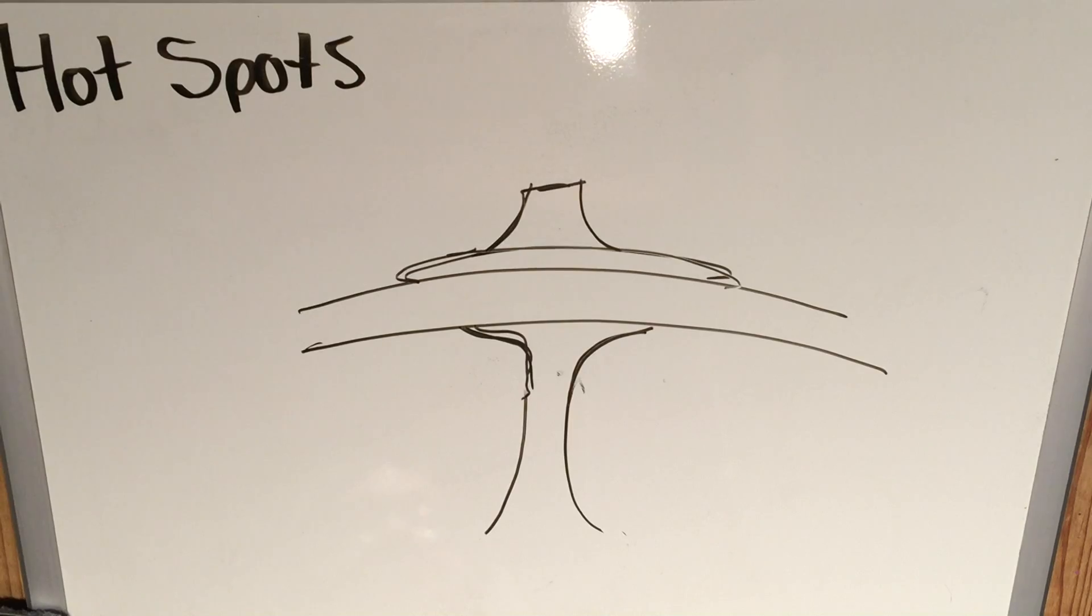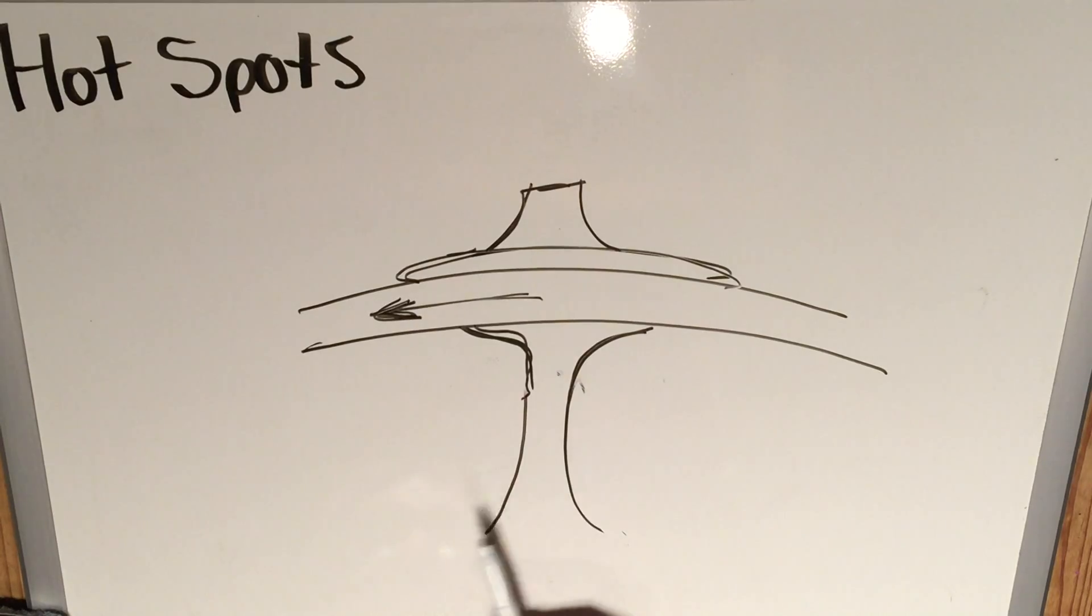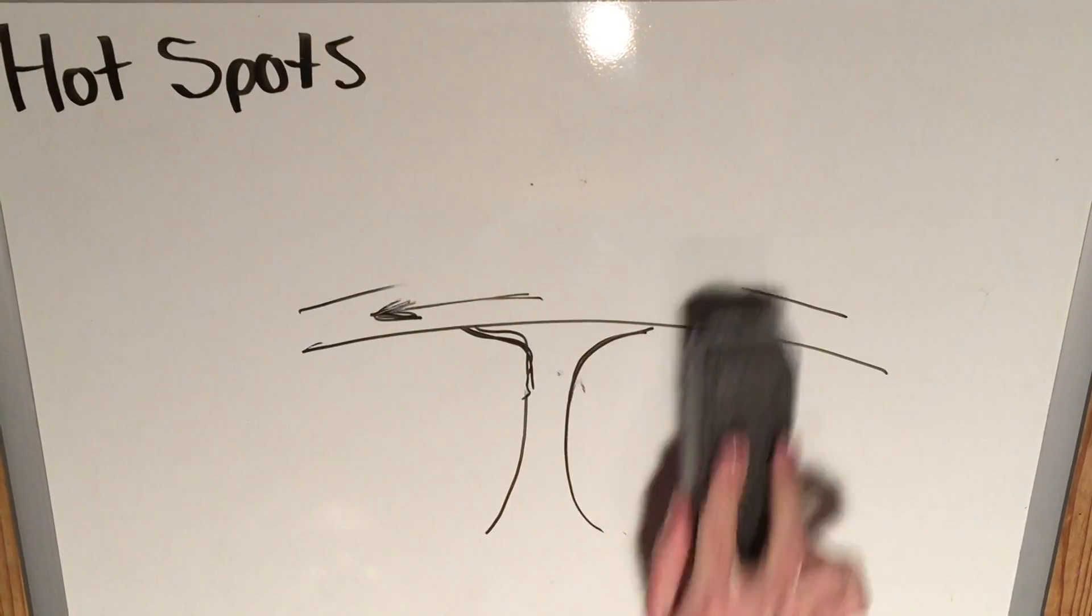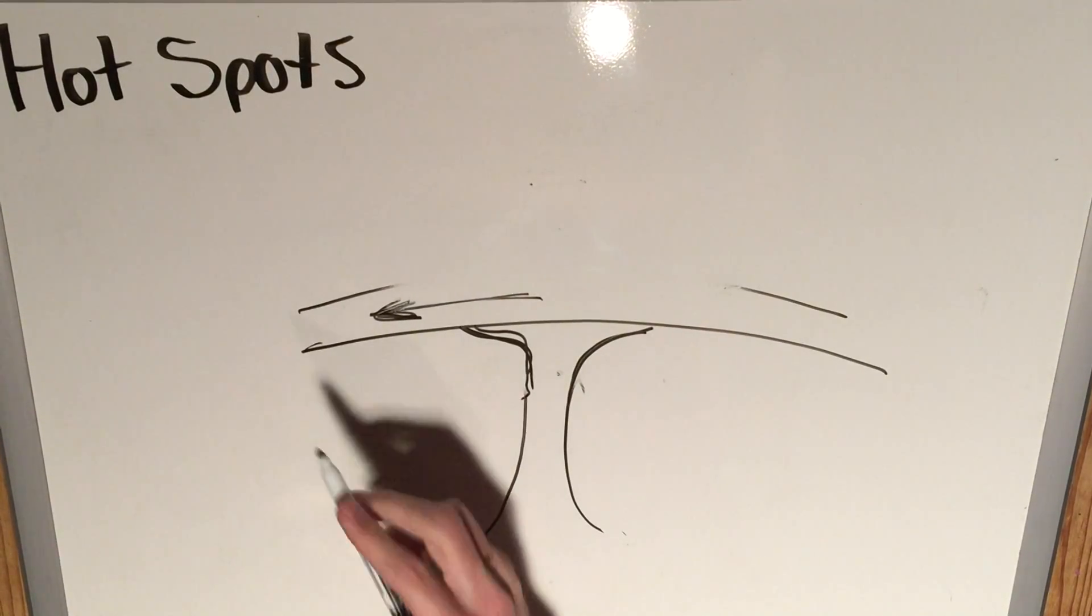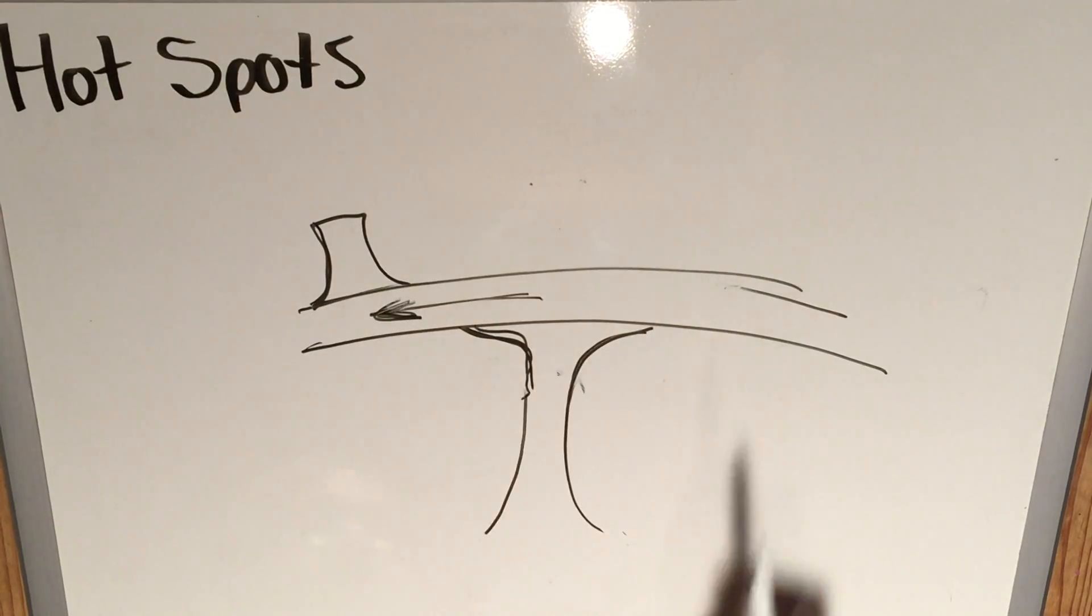Since this magma plume is not related to the convection currents that occur within the mantle, as this plate moves in whatever direction it's going in—let's just call that the west—this is going to stay stationary. So over time we may see that this volcanic island actually moves in this direction. Let's say this volcano is now over here.